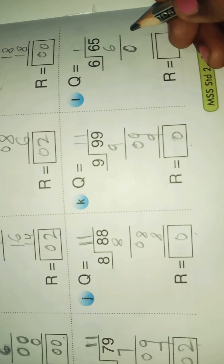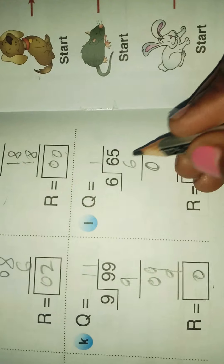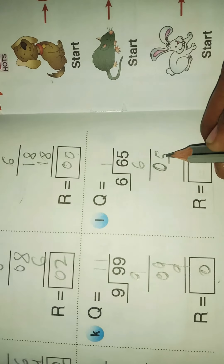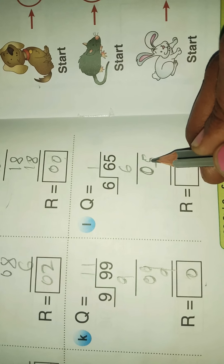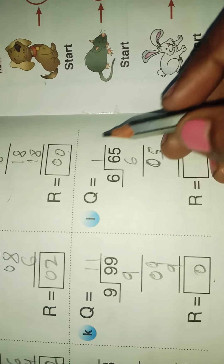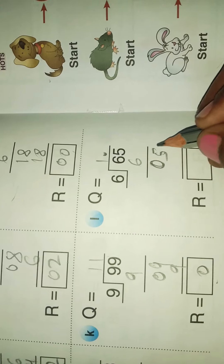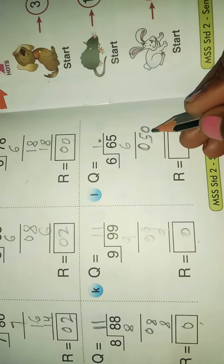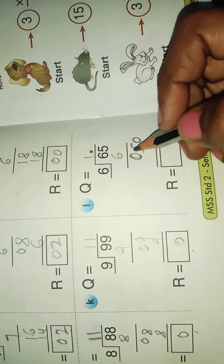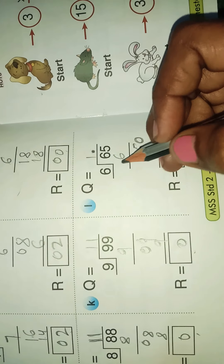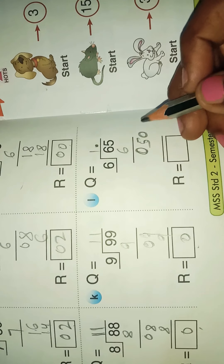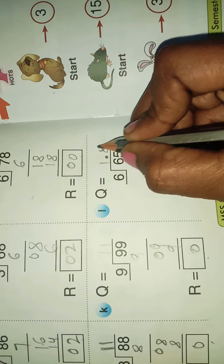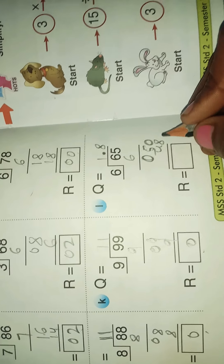6 minus 6 is 0. Bring down the 5 below. There is no 5 in the 6 times table, therefore put the decimal point here and take a zero. It becomes 50. Put the point here and use the 6 times table. Take the nearest or less than 50: 6 eights are 48.